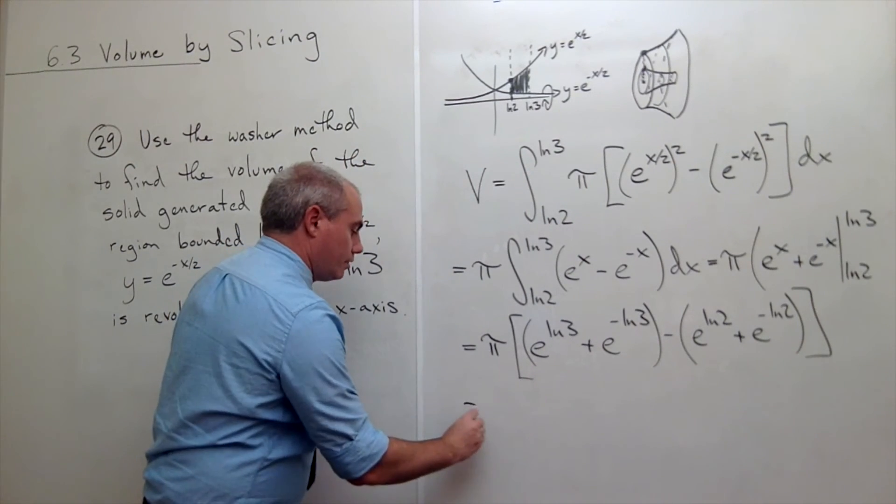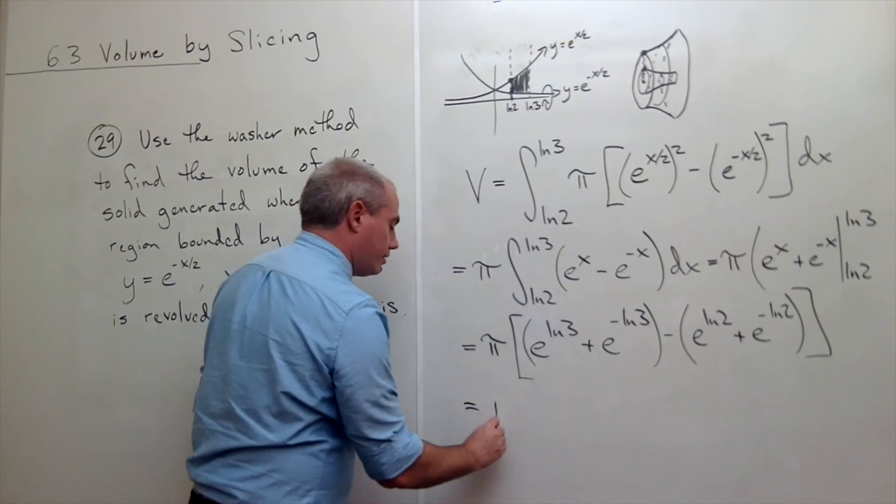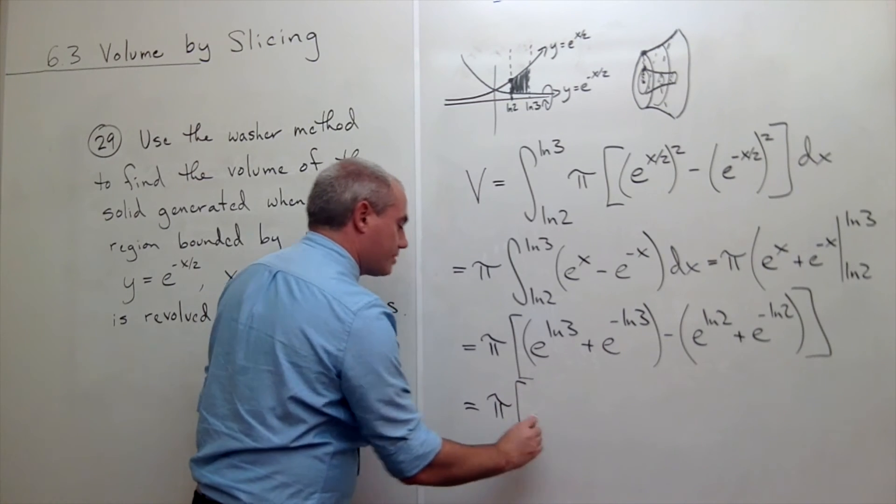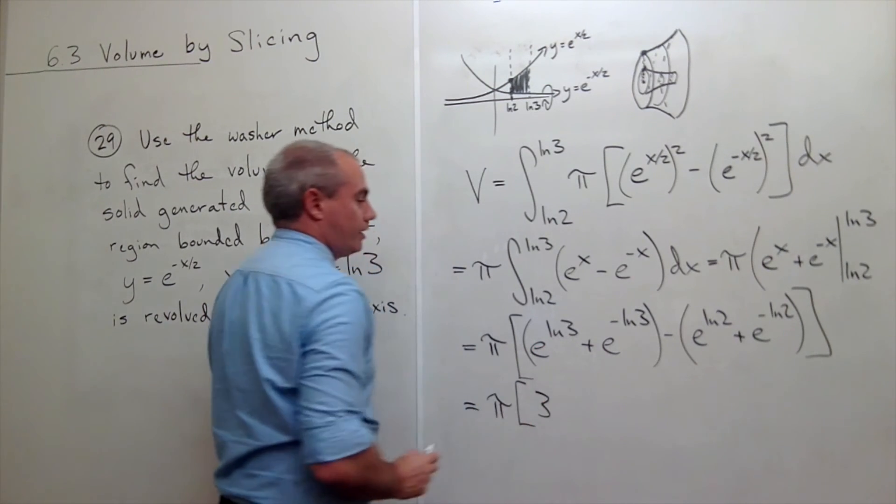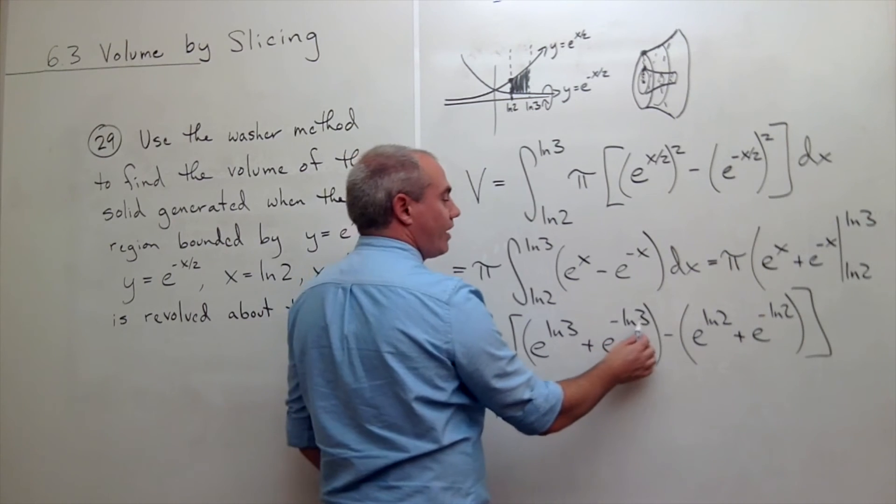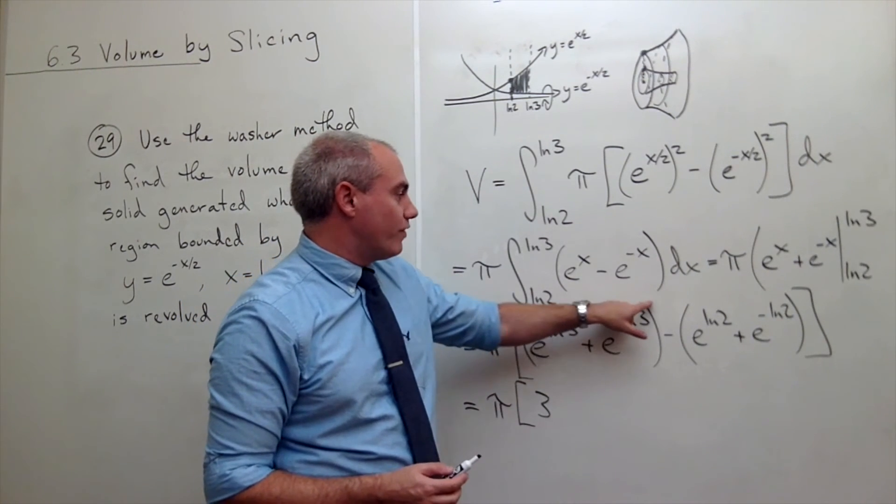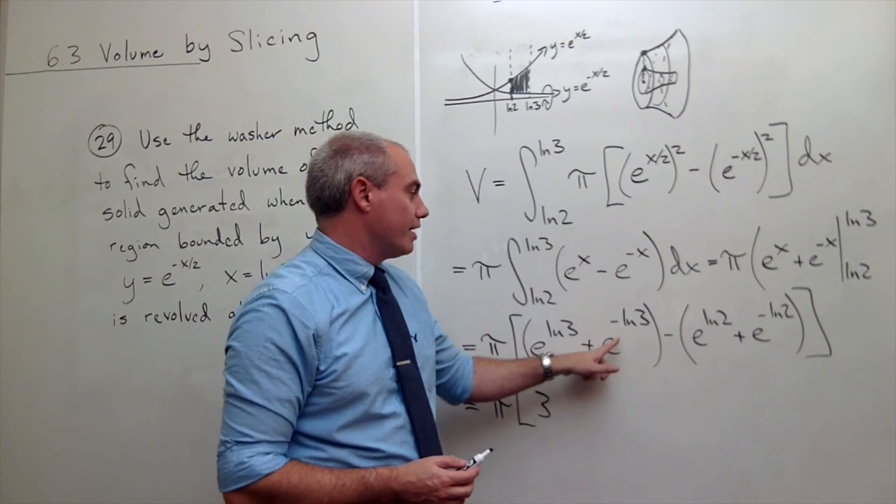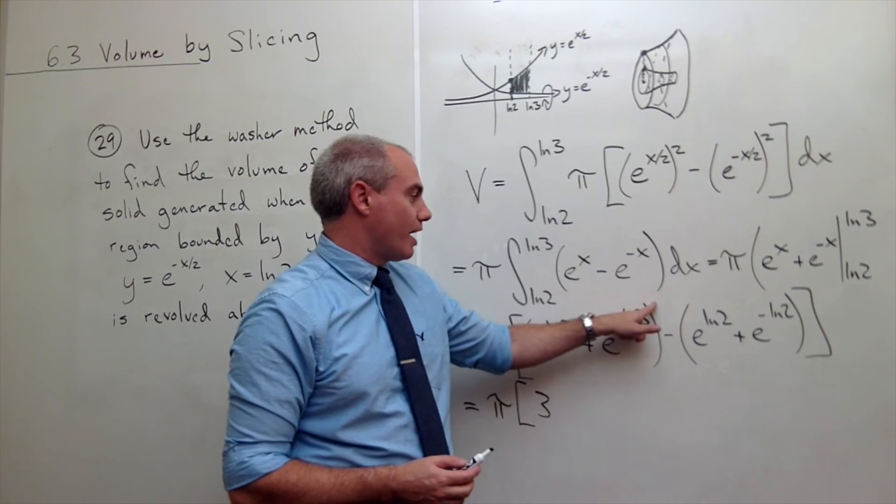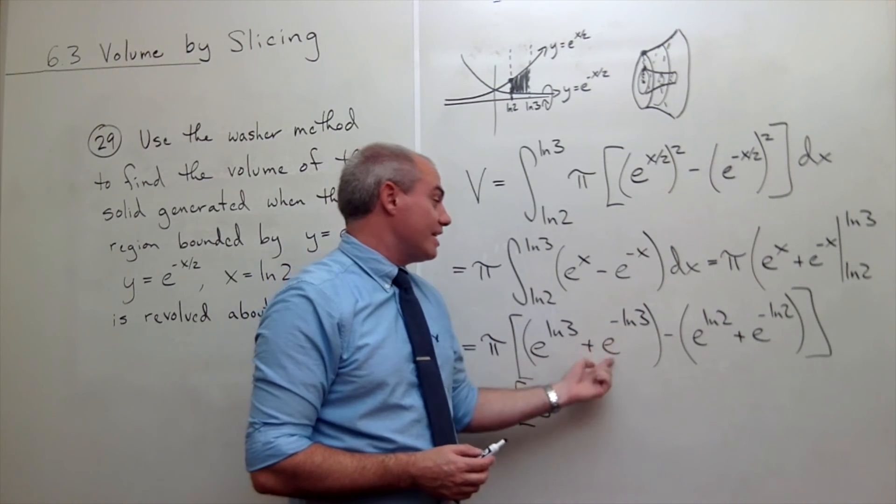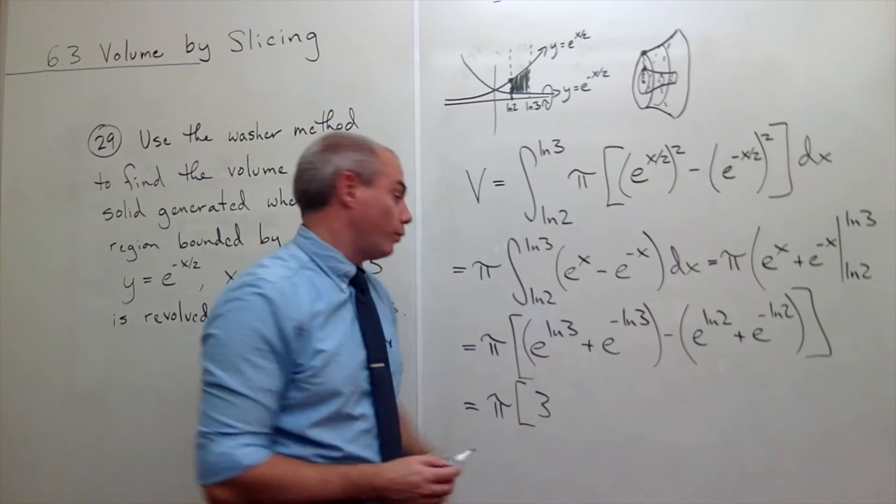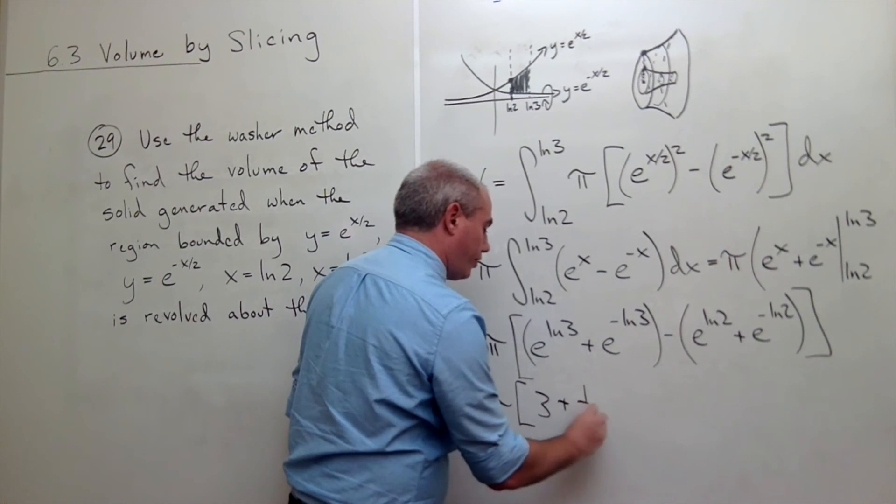Okay, let's simplify this a little bit. This is pi times e to the ln of 3 is just 3. e to the negative ln of 3, well, we could take that minus and move it up as the exponent on the 3. So we have ln of 3 to the minus 1. In other words, e to the ln of 1 third, which is 1 third, minus,